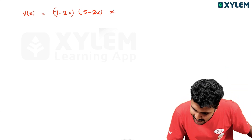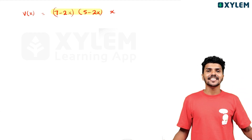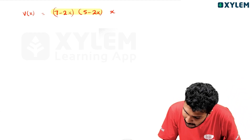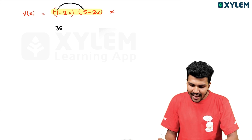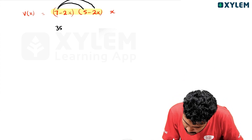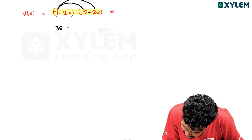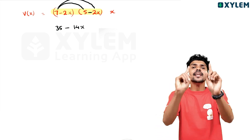Now, if we are going to do this in the middle of the glass, let's do this. 7 into 5 equals 35. This is 7 into minus 2x — 7 into minus 2x.